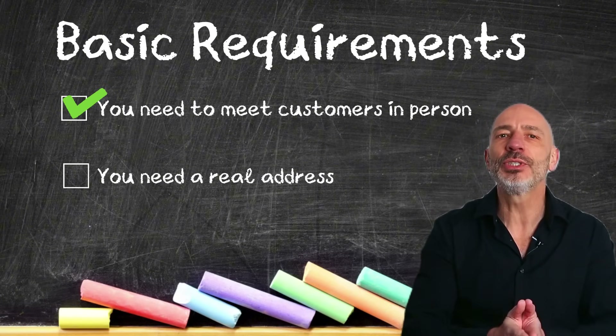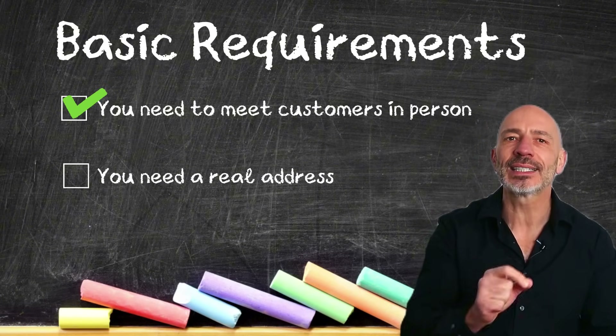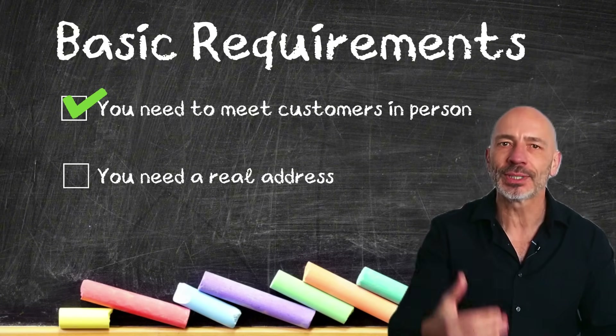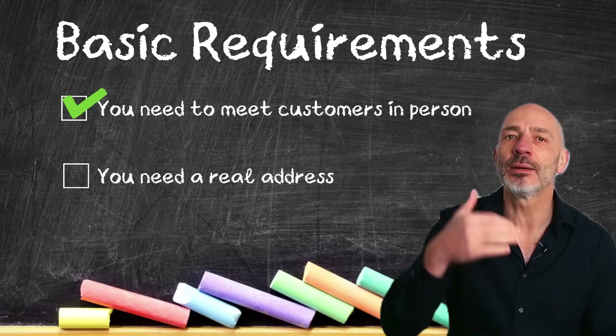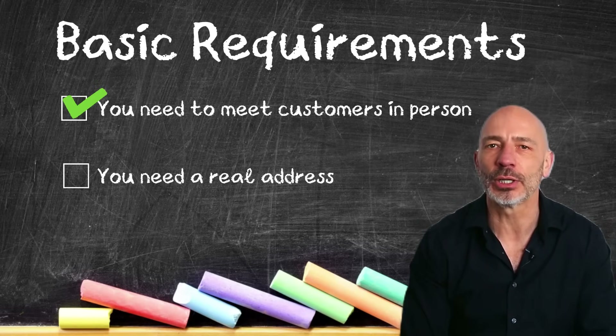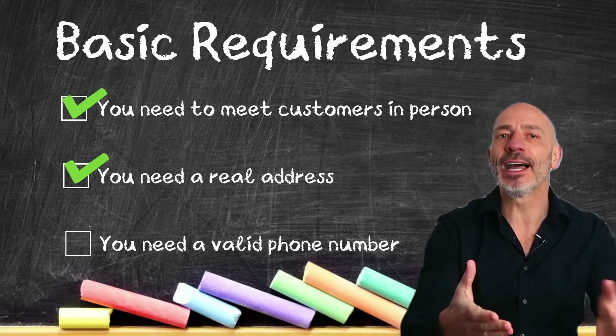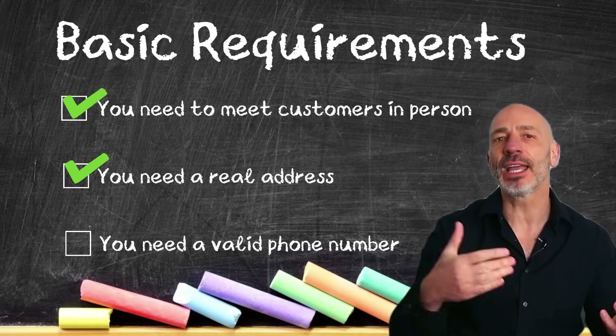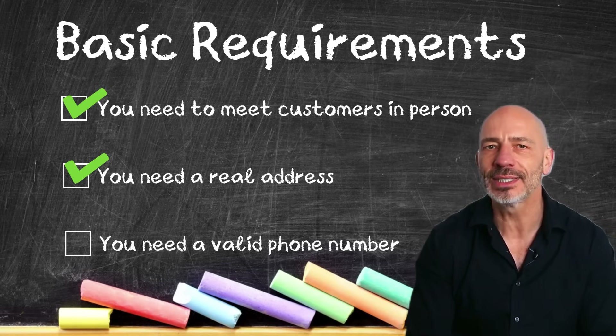Your address can be your home address, but virtual offices or PO boxes don't count. If you're working out of a co-working space, you'll need to have a sign with your business name out front. You also need a valid phone number — a working contact number where someone actually answers during your business hours. If your business doesn't meet these basic requirements, creating a Google Business Profile won't work and will just be a waste of time.